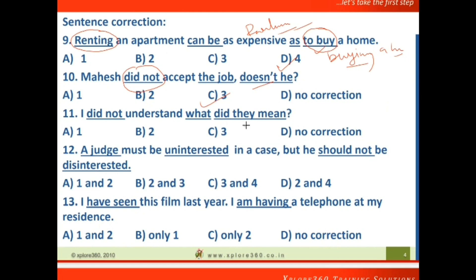Question 11: 'I did not understand what did they mean.' The error is in the embedded question — you should not use 'did' inside an indirect question. The correct sentence is: 'I did not understand what they meant.' The problem is at the third part.